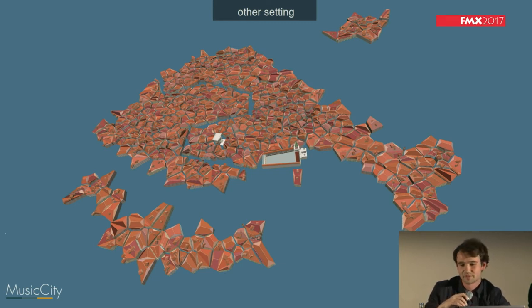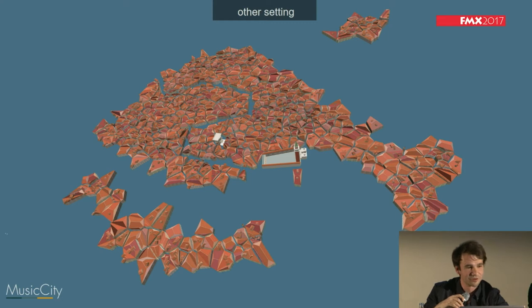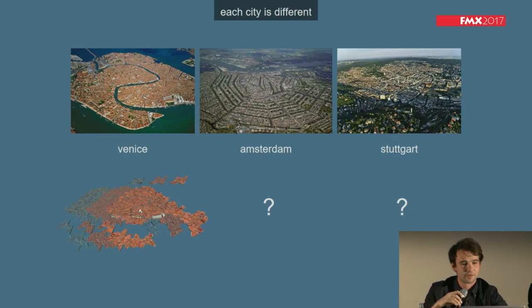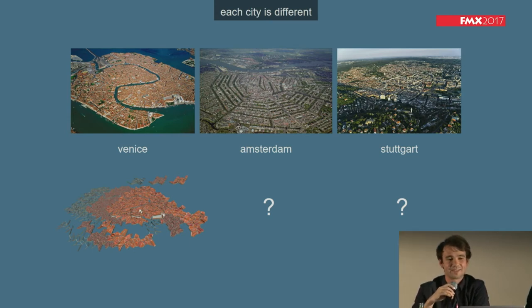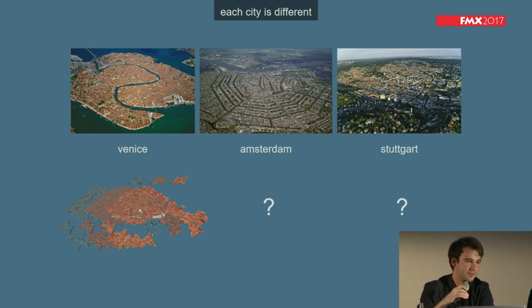With this experience — we built the whole Venice setting in five days — we thought we could do other cities just as fast. Maybe Amsterdam, or even Stuttgart.